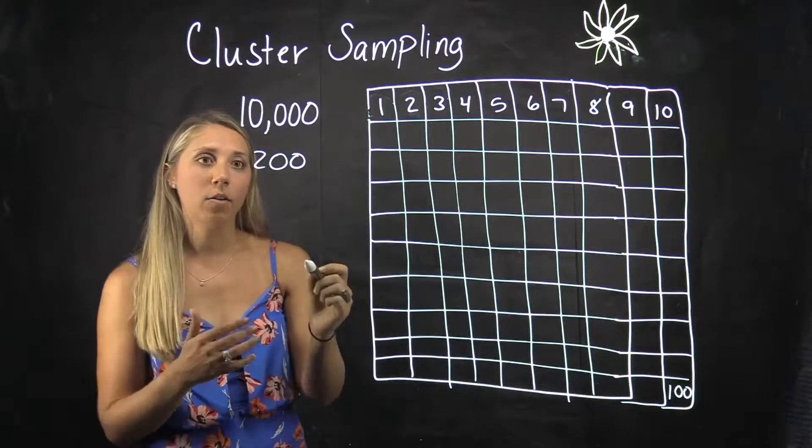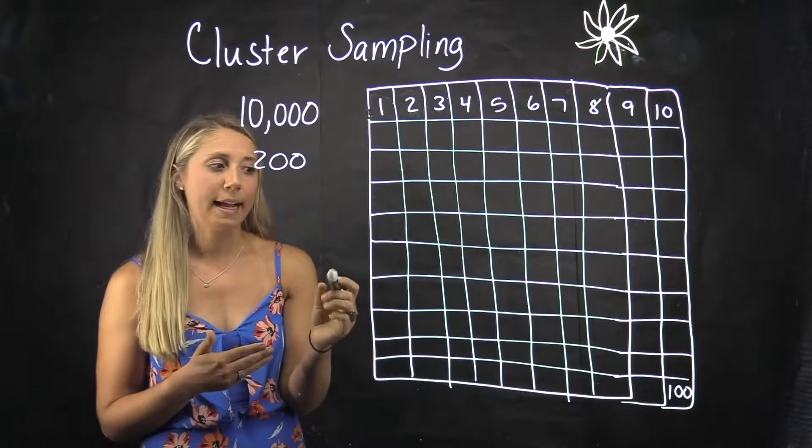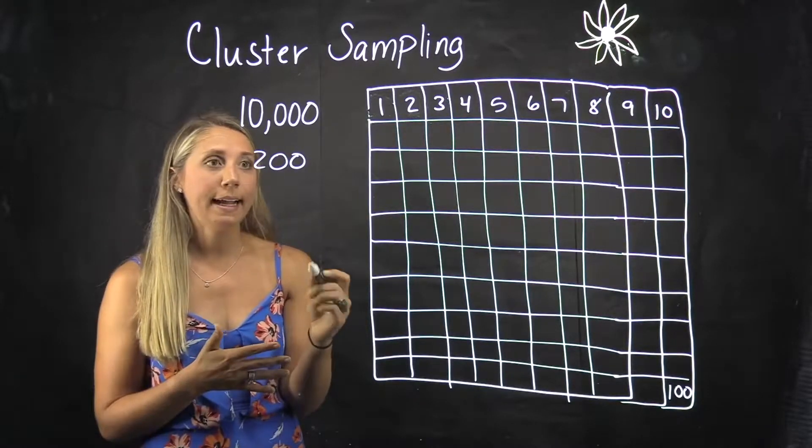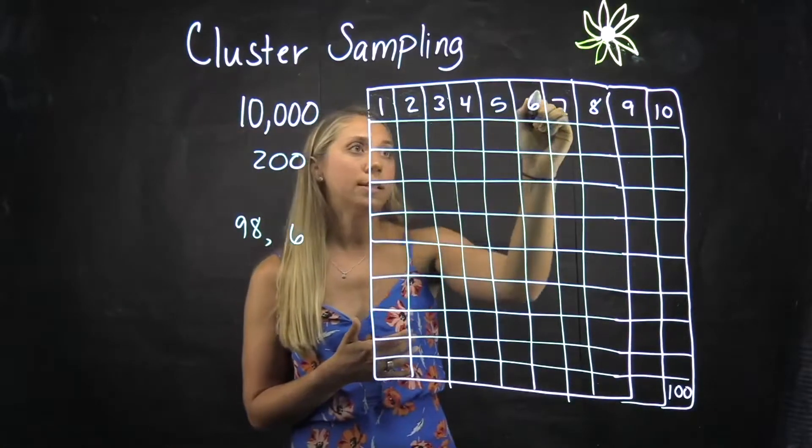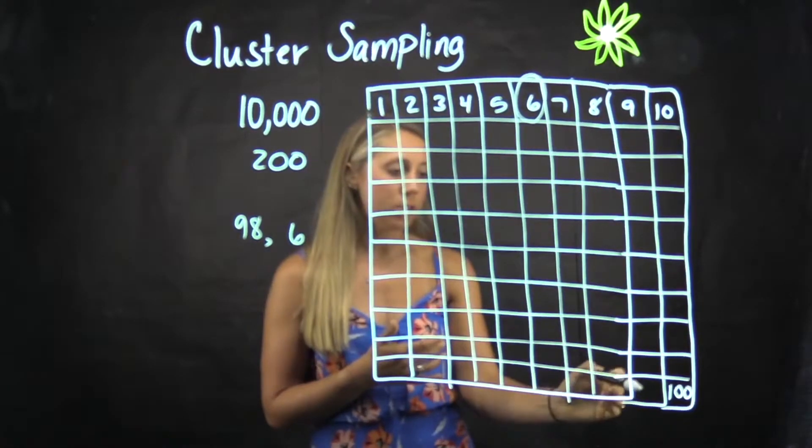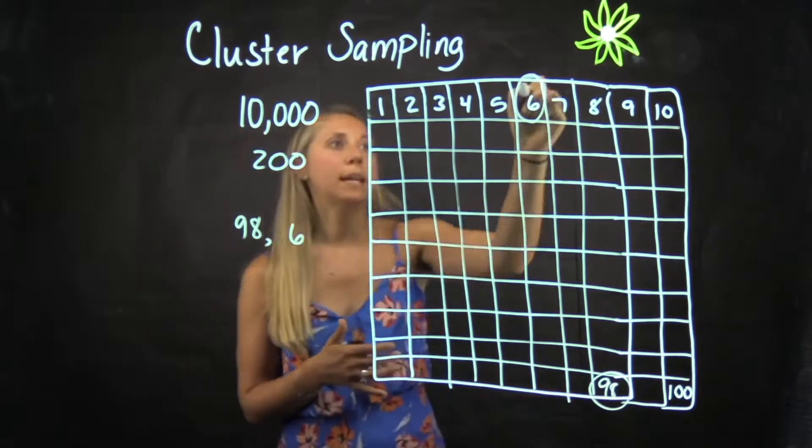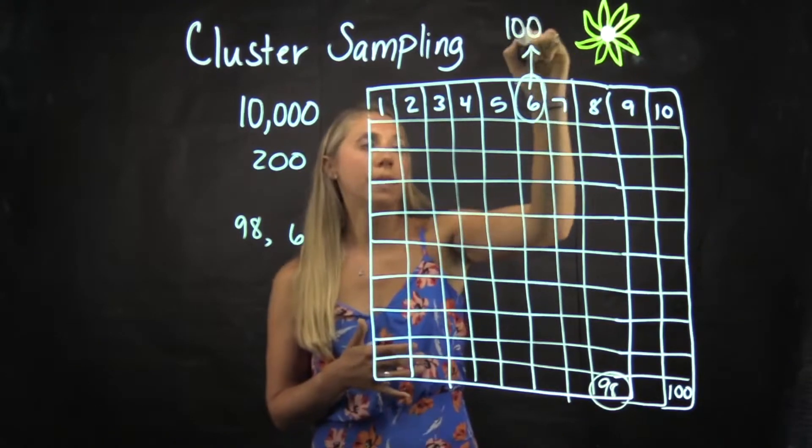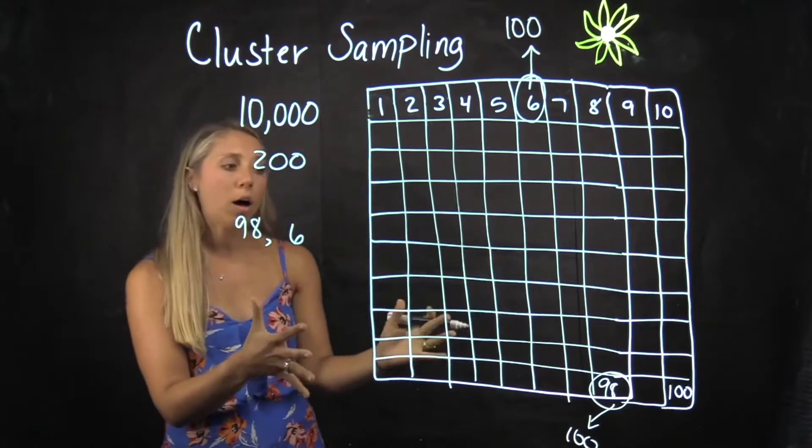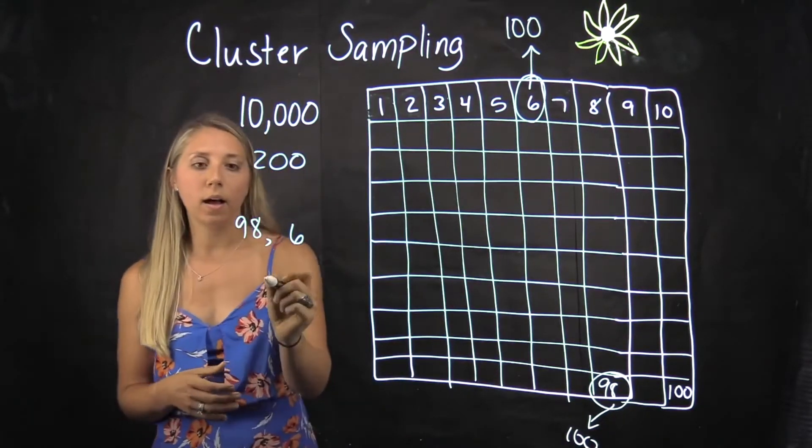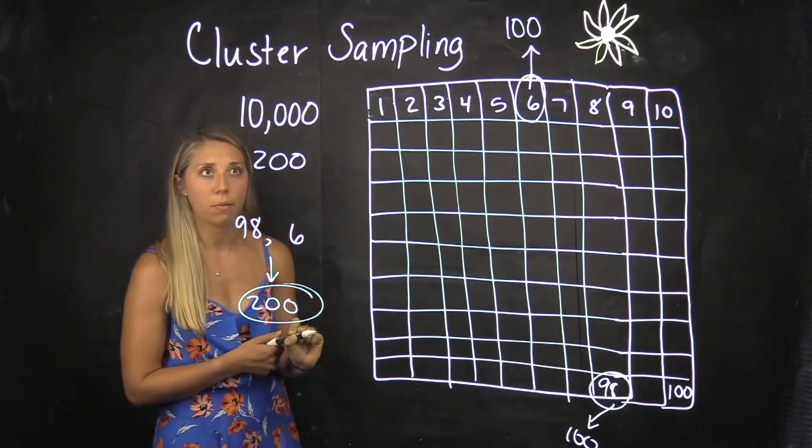So if I got randomly, let's just say I got number 98 and I got number 6. So cluster 6 is here, cluster 98 would be here. That means I'm going to take the 100 sunflowers from this plot and the 100 sunflowers from this plot and measure them all to make my 200 size sample, which is what I wanted.